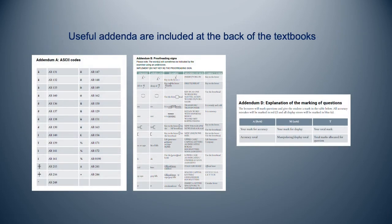Useful addenda are included at the back of the textbooks to make the student book and lecturer guide more user-friendly and to make referencing easier. This includes shortcut keys which help students work faster. For example, if a document needs to be printed, instead of leaving the keyboard, taking hold of the mouse, clicking on the file, and selecting the print function, using the shortcut keys will save time.